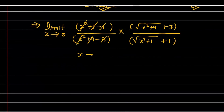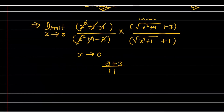अब इस function में x को 0 की ओर approach कराएं तो यह quantity 3 की ओर approach करेगी, तो denominator में मिलेगा 3 plus 3, और numerator में मिलेगा 1 plus 1। जिसे आप लिख सकते हैं 6 upon 2, and finally your answer is 3.